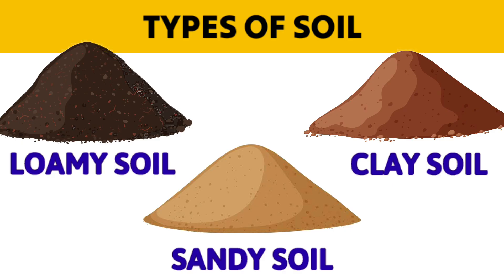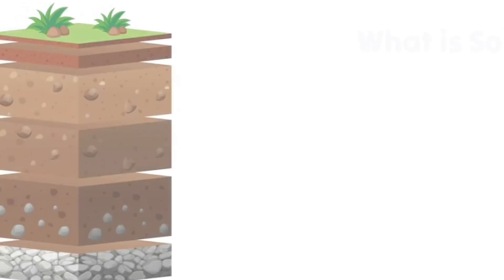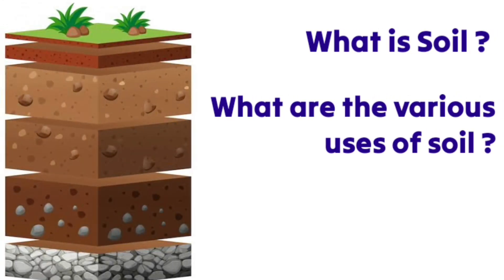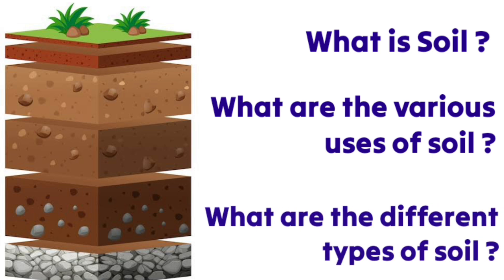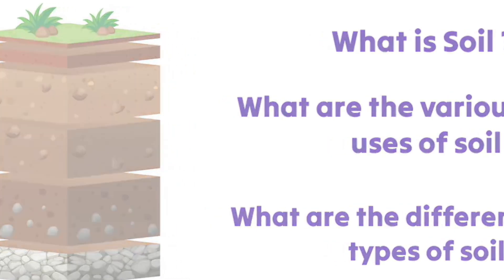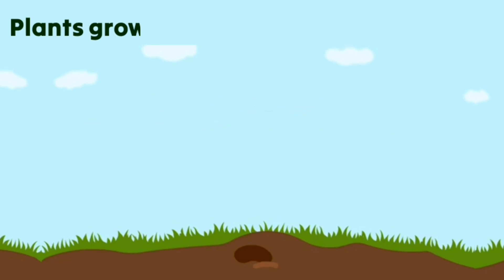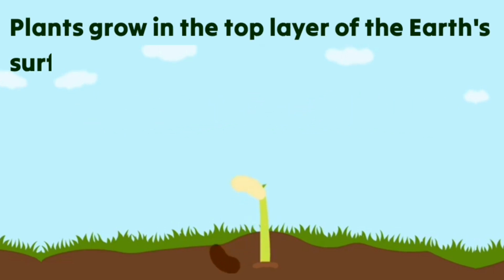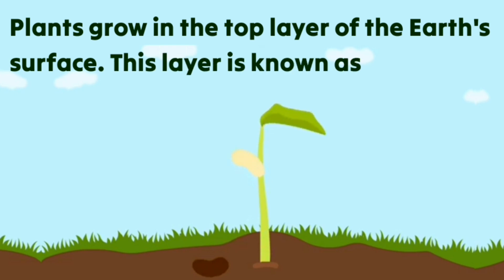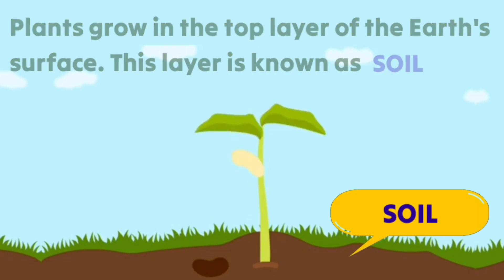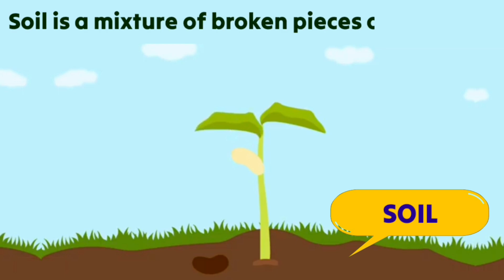In this video we are going to learn about what is soil, what are the various uses of soil, and what are the different types of soil. Plants grow in the top layer of the earth's surface. This layer is known as soil. Soil is a mixture of broken pieces of minerals and rocks.